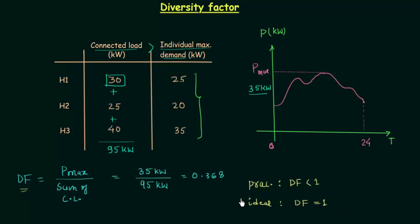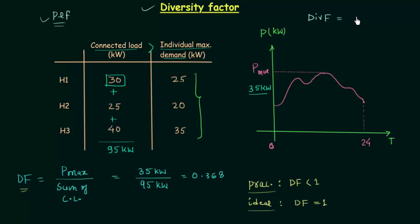Now we will talk about diversity factor. Diversity factor is very important. Of all the different things we have studied so far, diversity factor and plant load factor are the two most important. You have to focus more on plant load factor and diversity factor because they play a very important role in reduction of cost. Diversity factor is equal to the ratio of the sum of individual maximum demands to the maximum power demand.